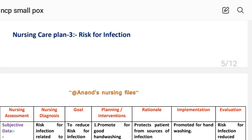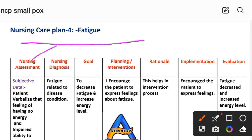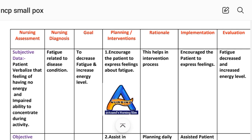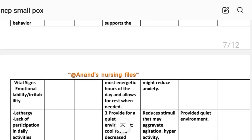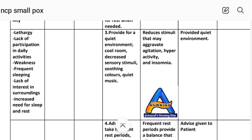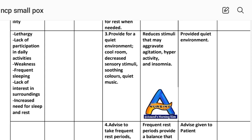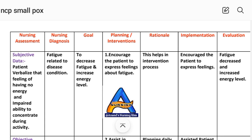Nursing care plan number four: fatigue. This includes nursing assessment, diagnosis, goal, planning, rational, implementation and evaluation. Subjective data: patient verbalizes feeling of having no energy and impaired ability to concentrate during activity. Objective data: jitteriness, visual disturbances, emotional lability, irritability, lethargy, lack of participation in daily activities, weakness, frequent sleeping, lack of interest in surroundings, and increased need for sleep and rest. Nursing diagnosis: fatigue related to disease condition. Goal: to decrease fatigue and increase energy level.